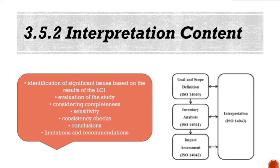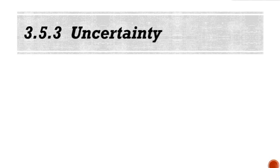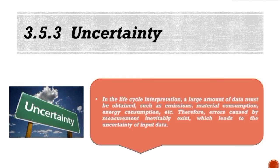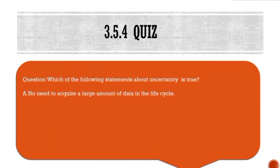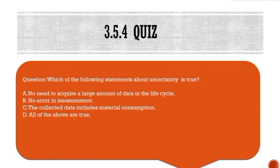Besides, in the life cycle interpretation, a large amount of data must be obtained, such as emissions, material consumption, energy consumption, etc. Therefore, errors caused by measurement inevitably exist, which leads to the uncertainty of input data. Next, there is a small question and answer session: Which of the following statements about uncertainty is true? Option A: No need to acquire a large amount of data in the life cycle. Option B: No error in measurement. Option C: The collected data includes material consumption. Option D: All of the above are true. Think it over. The answer is Option C. Did you get it right?